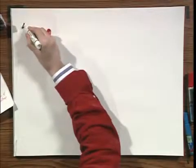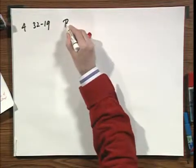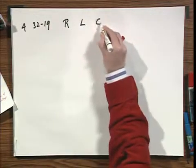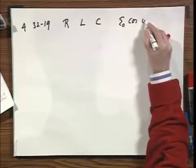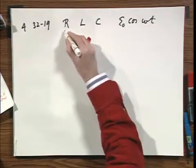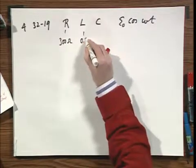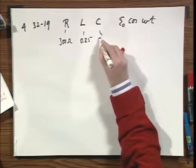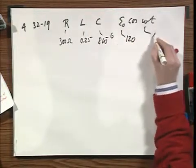Problem number four, which is 32-19. I have an R, I have an L, I have a C, I have E zero cosine omega T. 300 ohms, 0.25 Henry, eight times ten to the minus six farad, 120 volts, 400 radians per second.